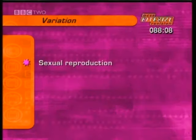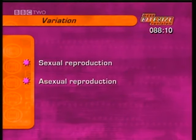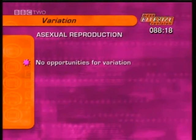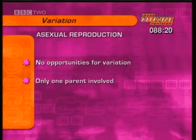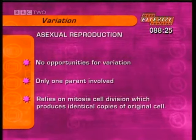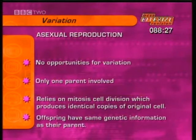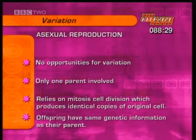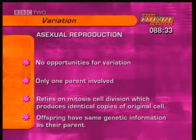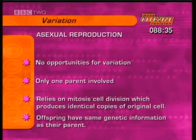Organisms can reproduce either by sexual reproduction or by asexual reproduction. Asexual reproduction does not introduce variation. Only one parent is involved, and asexual reproduction relies on mitosis cell division, which produces identical copies of the original cell. That means offspring have exactly the same genetic information and are exact copies, or clones, of their parents.